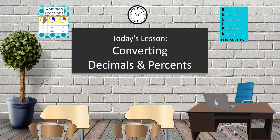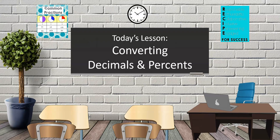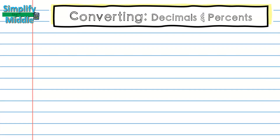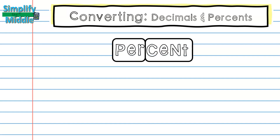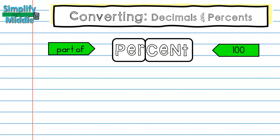Hi, and welcome to today's lesson: Converting Decimals and Percents. Let's first start by looking at the word percent. We can break percent into 'per,' which means part of, and 'cent,' which means 100.